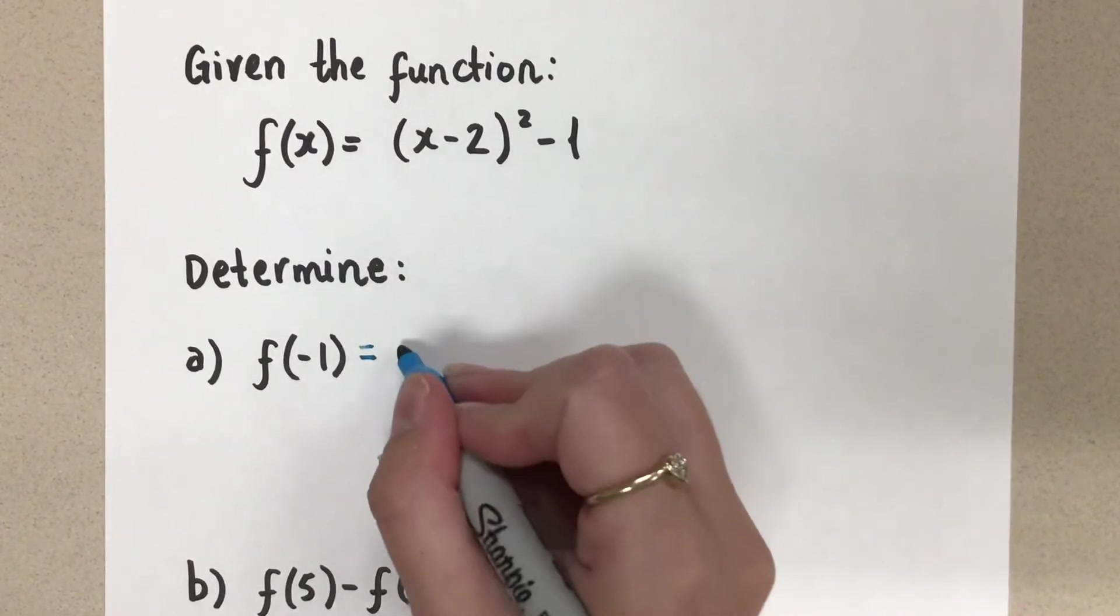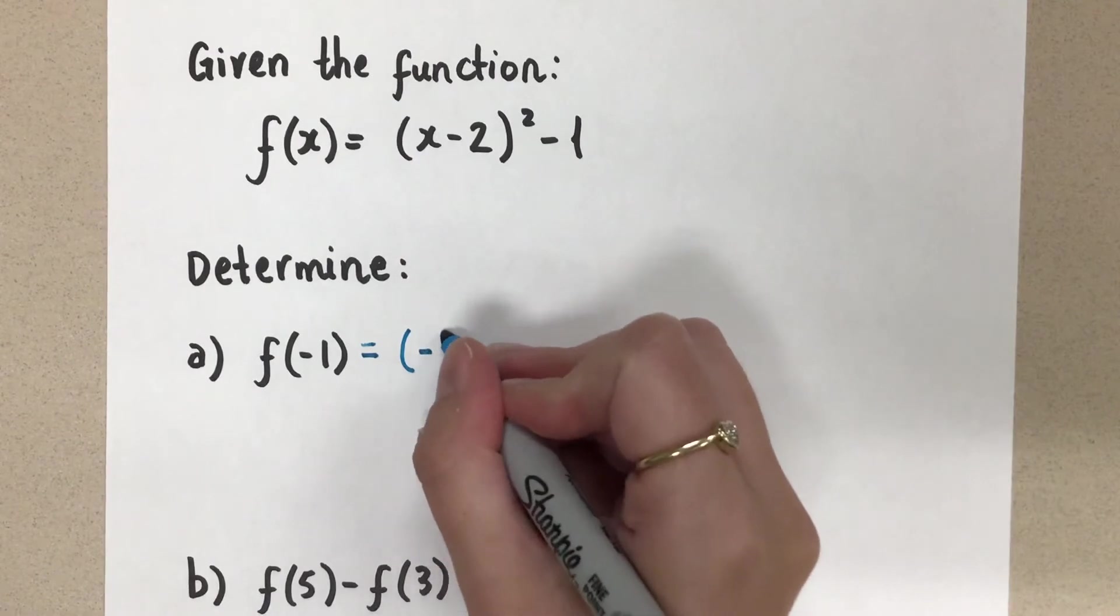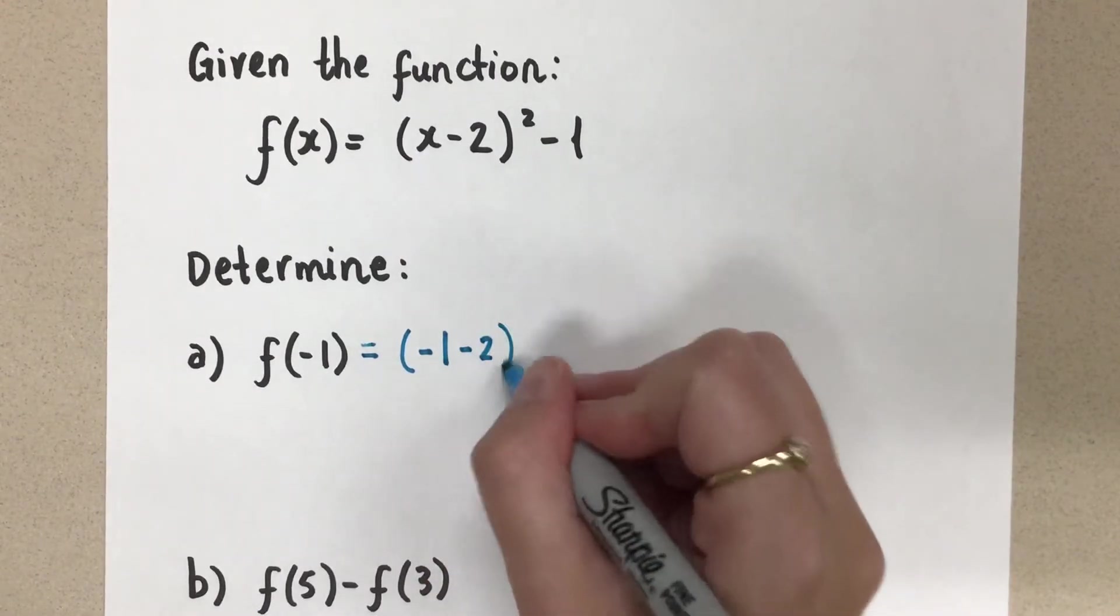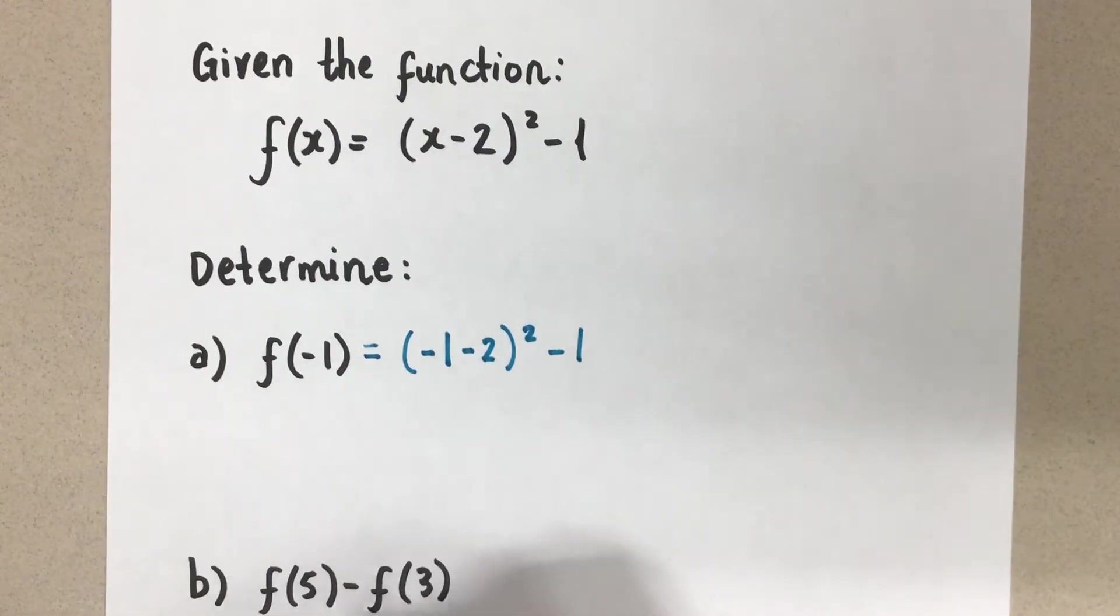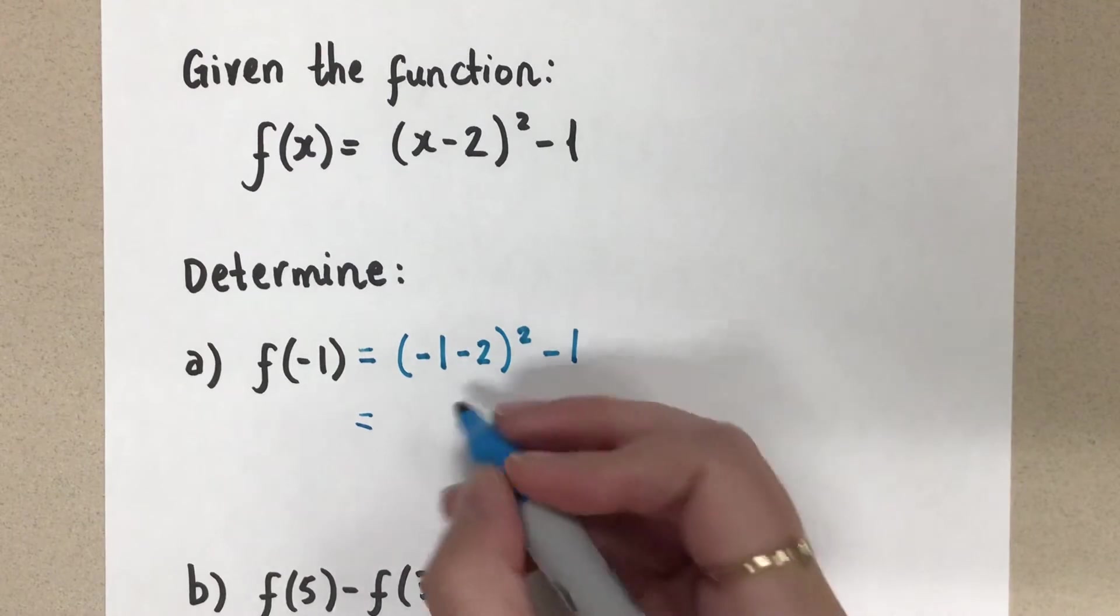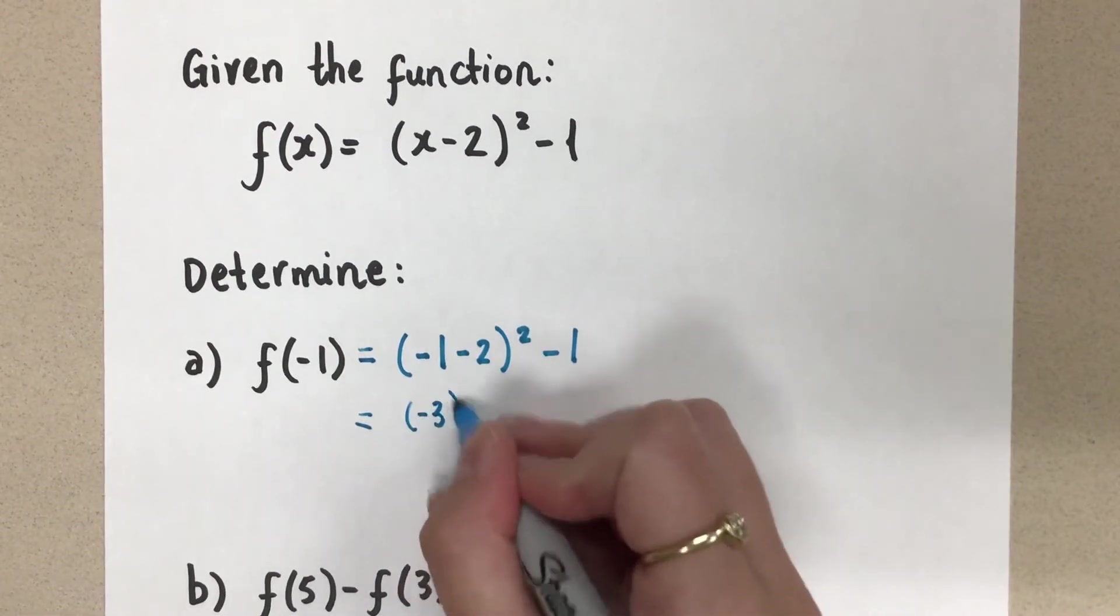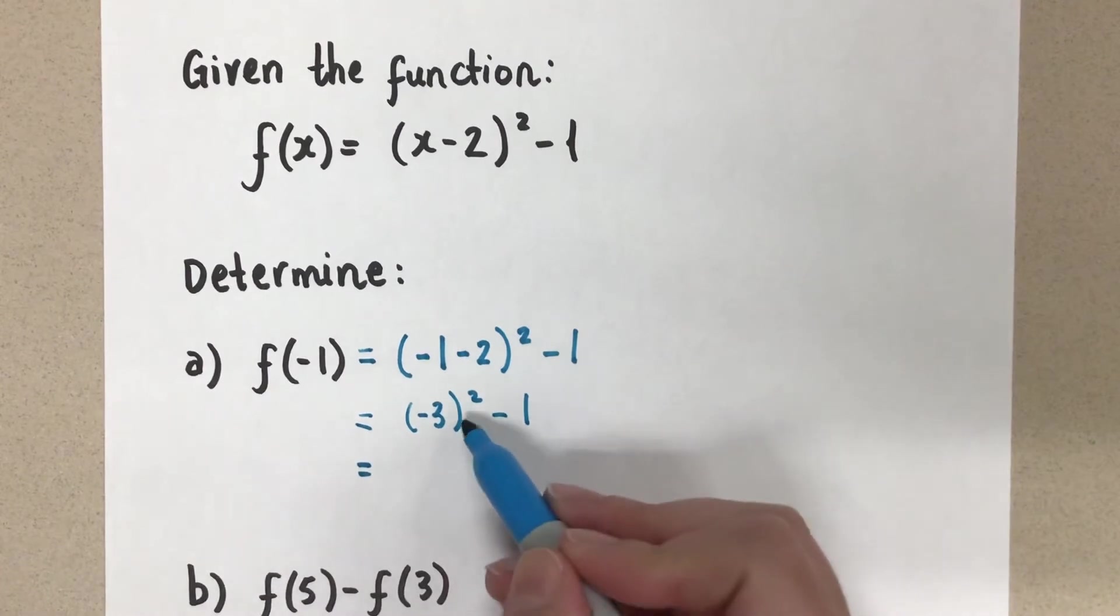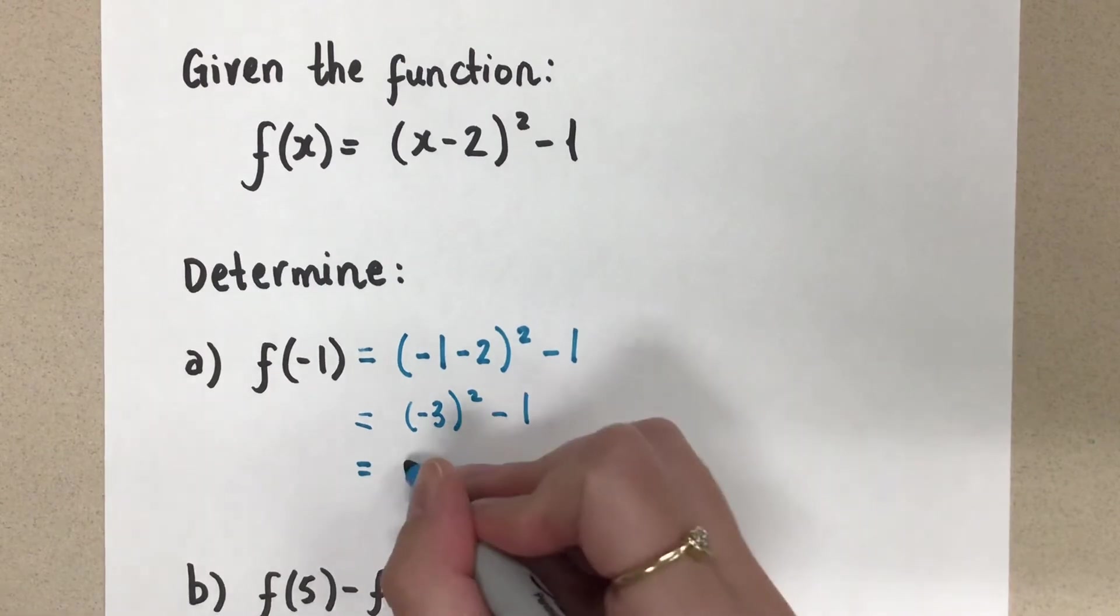So let's sub this in. We're going to take that exact equation. We're going to make sure that we sub in that negative 1 where we see an x here. We're going to evaluate this. So negative 1 minus 2 is going to give us negative 3, square it and then minus 1. This is going to be 9 minus 1, which gives us 8.